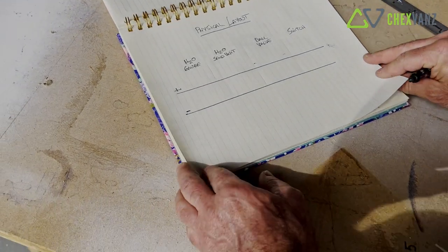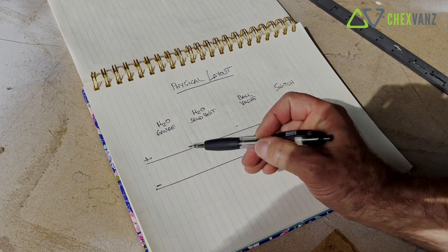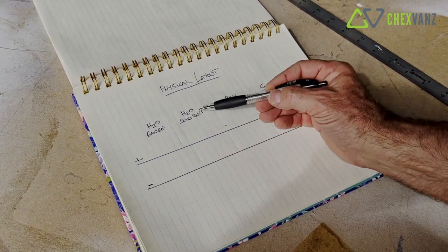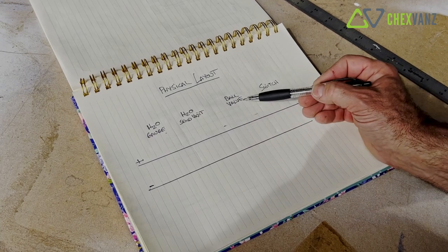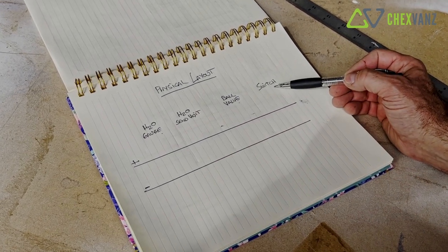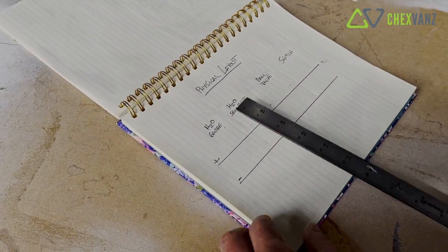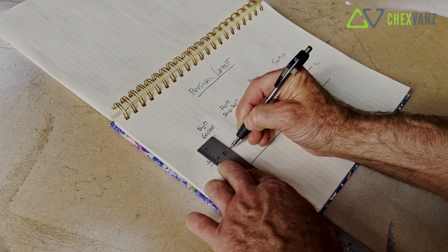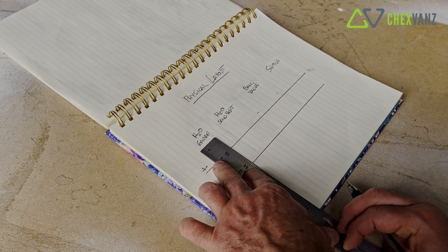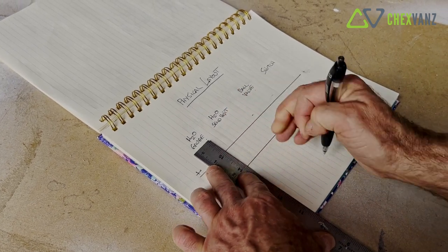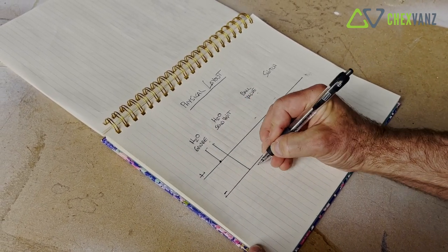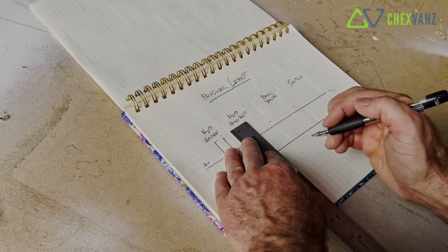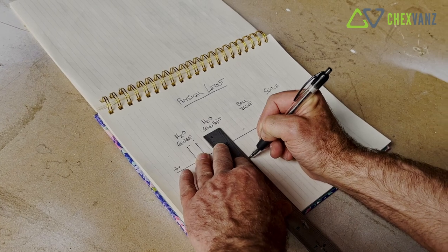If we look at a physical layout, we have the same thing. We have our positive and negative battery, we have a water gauge, we have a water sending unit, we have a ball valve and we have a switch. So we know that the water gauge will get a positive and a negative connection. Physically we know the water sending unit will get a negative connection.